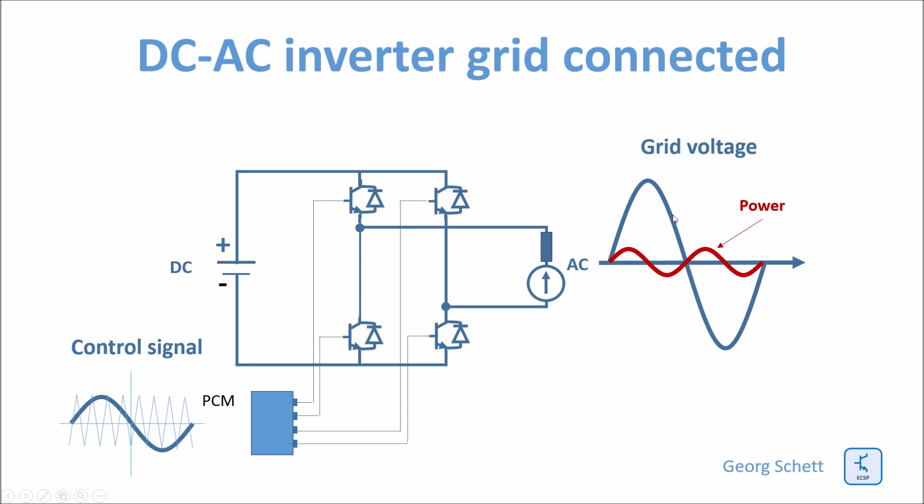As long as there is no phase shift between the reference grid voltage and my control signal, the power flow from the battery to my grid is virtually zero.